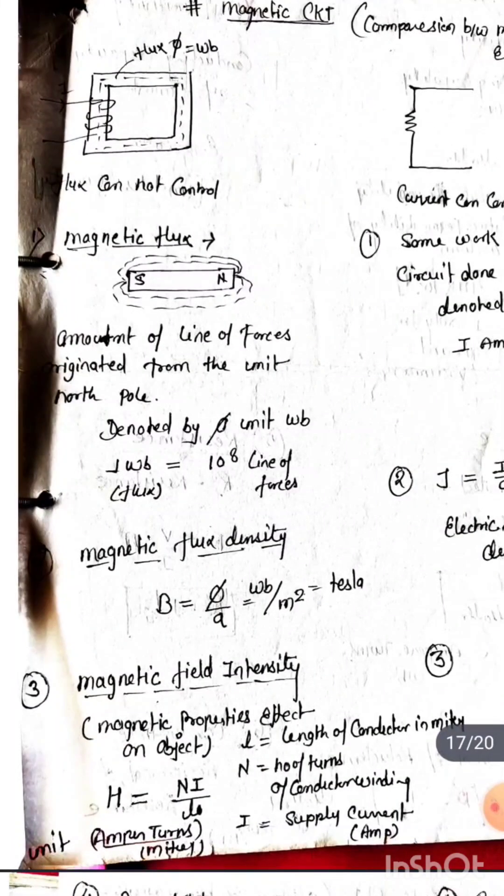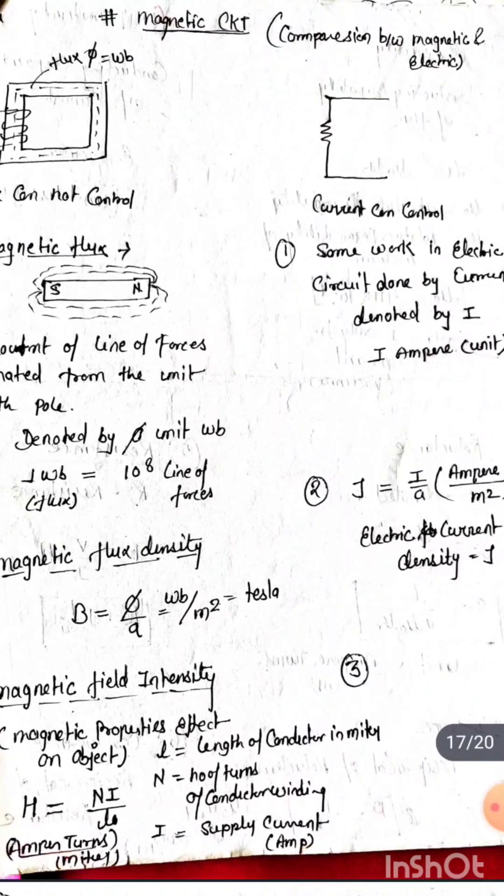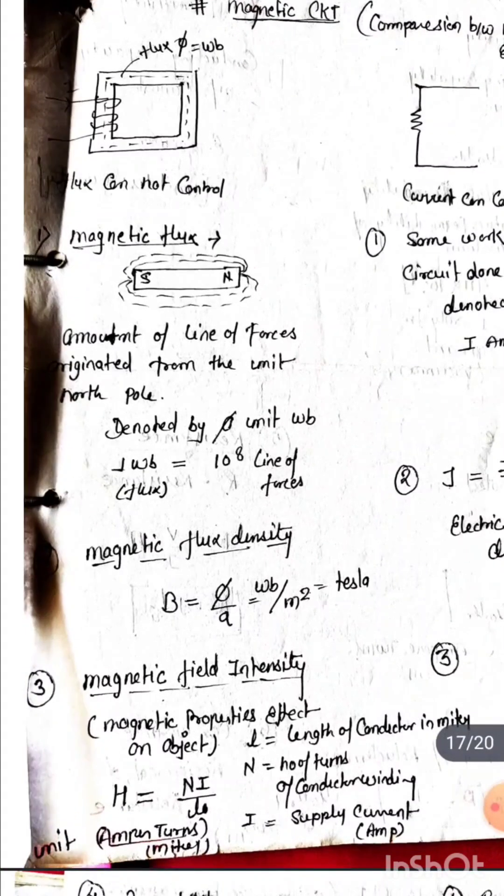The next one is the amount of lines of forces generated from the unit pole, denoted by phi in weber. One weber is equal to 10 to the power 8 lines of forces.